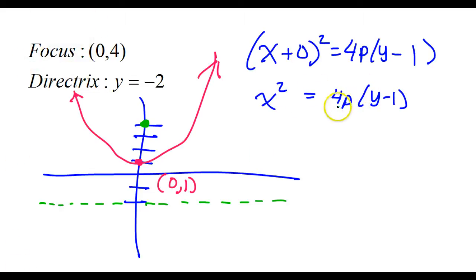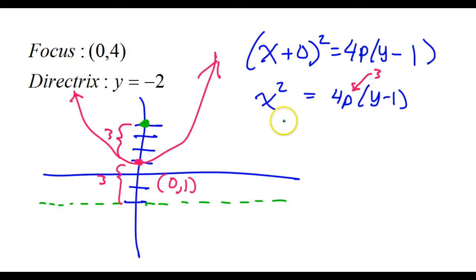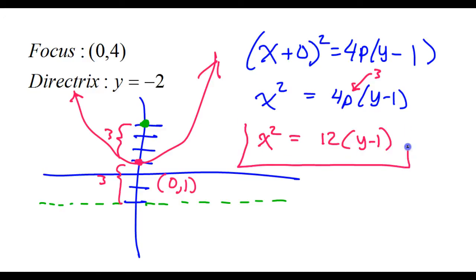I need to know what the p value is. The p value is going to be the distance between the vertex and the directrix, which is 3. Either way, it's a value of 3. So I'm going to take that 3 and plug it in — that's going to give me x² = 12(y - 1). And that's it, that's the equation for number 6.